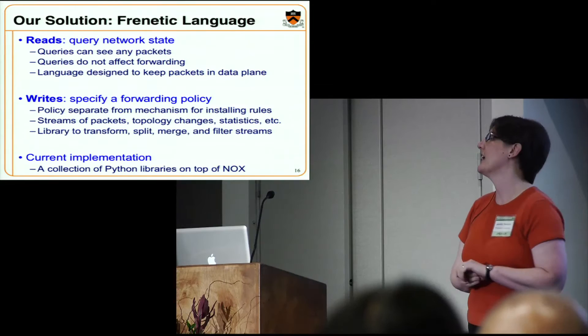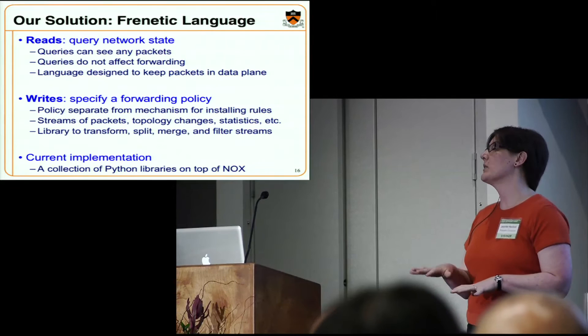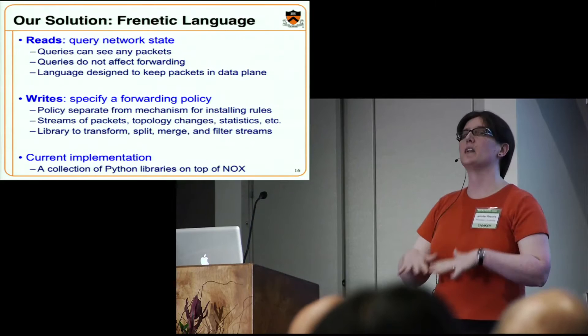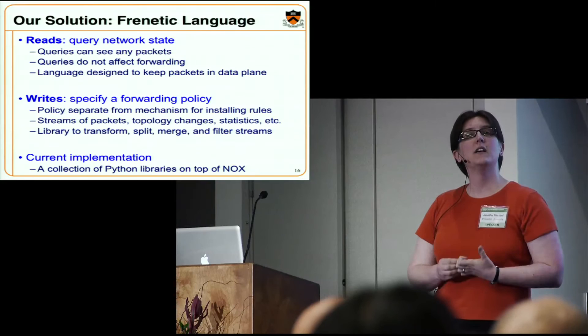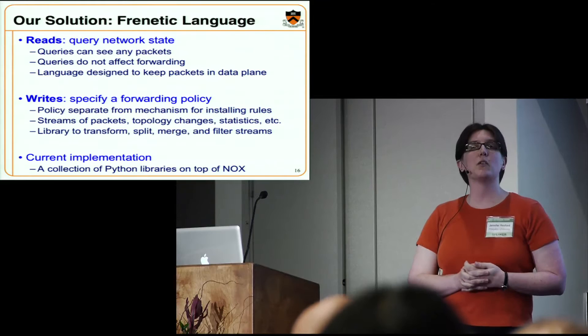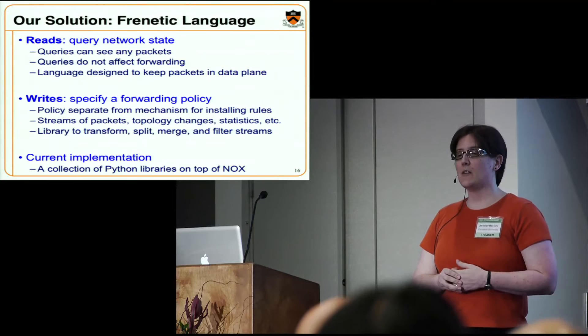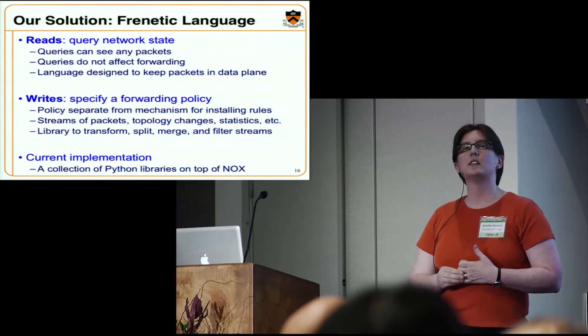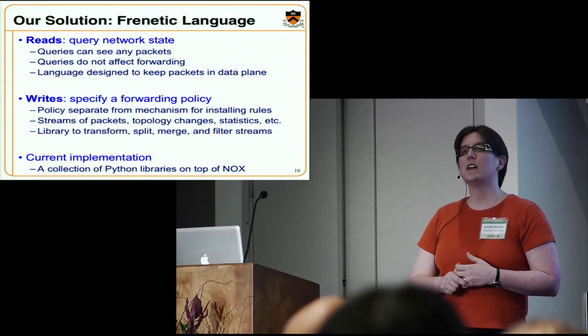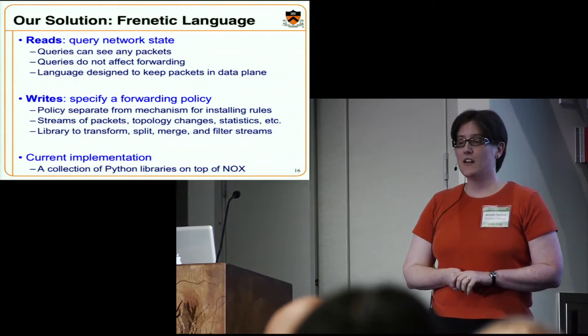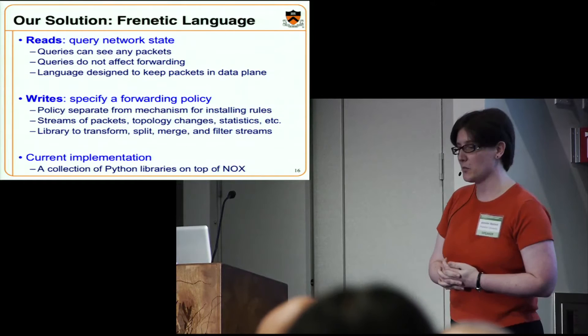For writes, we want to separate forwarding policy from the mechanism that implements it. This is similar to how OpenFlow works today, except we have a layer underneath that translates the writing of policy into the actual rules installed on switches, so we can compose multiple different modules together. This is based on a concept in programming languages called functional reactive programming, which views what's going on here as a whole bunch of different streams — streams of packets, streams of topology changes, streams of measurement data, and in the future maybe new streams from end hosts. We have a library full of operators to filter, merge, transform, and split different kinds of streams and express policy in terms of that. Our prototype is an extension to the existing Python API for NOX.